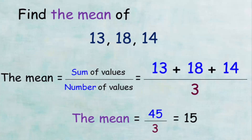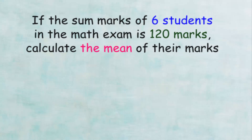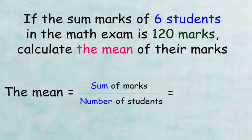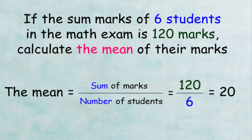Therefore, the mean is 15. Now, what if we have students' marks in a test and want to calculate the arithmetic mean? In this example, the sum of marks of 6 students in a math exam is 120. We already know the sum, so: 120 divided by 6, which equals 20. The mean of their marks is 20.